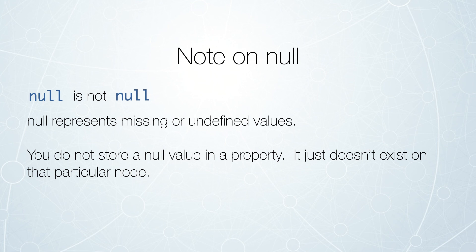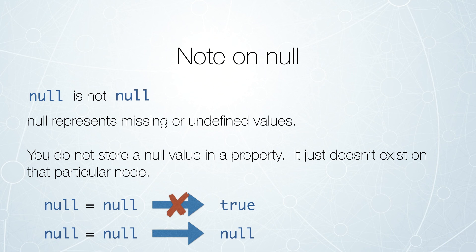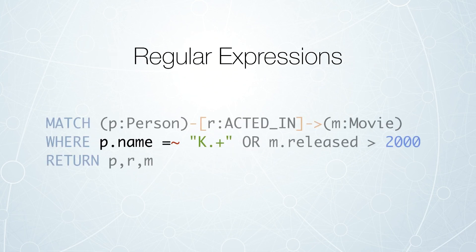So null is not null — null represents missing or undefined values. When comparing null to null, you're actually not going to get a true response; you're going to get a null response, because the values are missing and we don't know if they're equivalent to each other. There's another special comparison operator available in Cypher — the equal tilde operator (=~) — which allows us to do regular expression matching. Here, we're looking for a person who acted in a movie where that person's name starts with a K and is followed by 0 or 1 other characters.